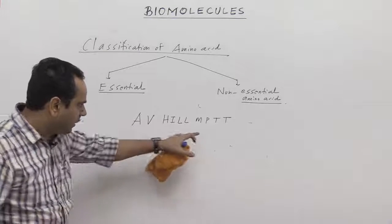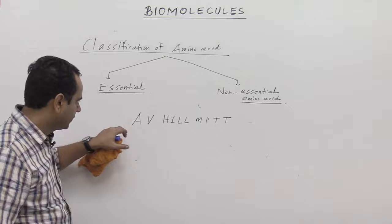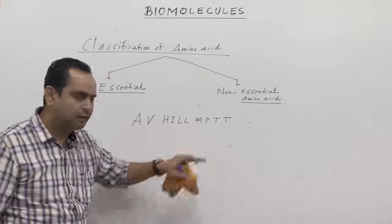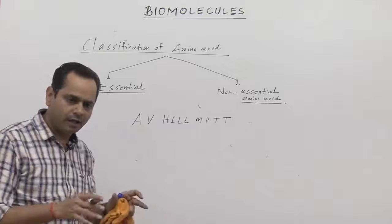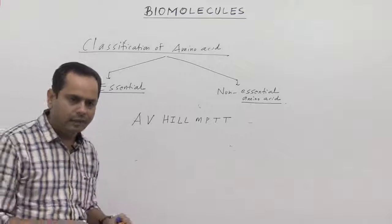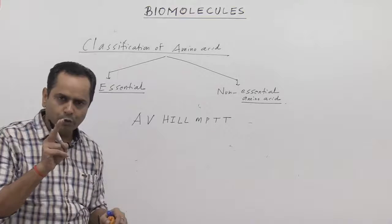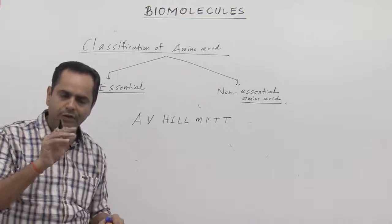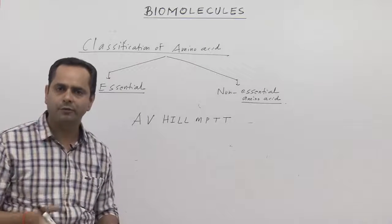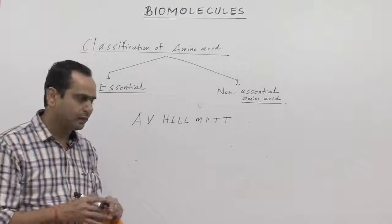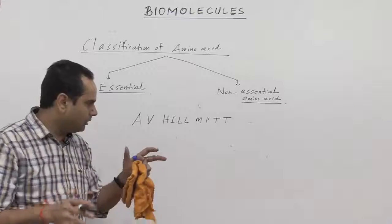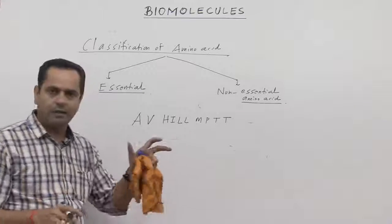Basically, this mnemonic contains 10 alphabets — 1, 2, 3, 4, 5, 6, 7, 8, 9, 10 — in which there are 8 fully essential and 2 amino acids called semi-essential amino acids. Let's remember all these names.